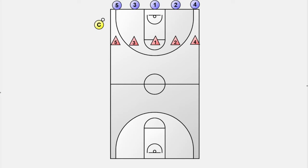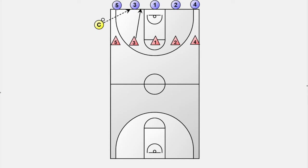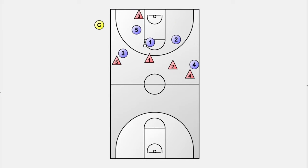We have 5 offensive players spread across the baseline and 5 defensive players lined up along the free-throw line extended, each matched up with an offensive player. The drill starts with a pass from the coach to an arbitrary offensive player on the baseline. The defensive player lined up across from the offensive player that received the ball must touch the baseline before defending. It is up to the offensive players to make an extra pass to a point guard or to start the transition offense right away. The defense sprints back and reorders their matchups.